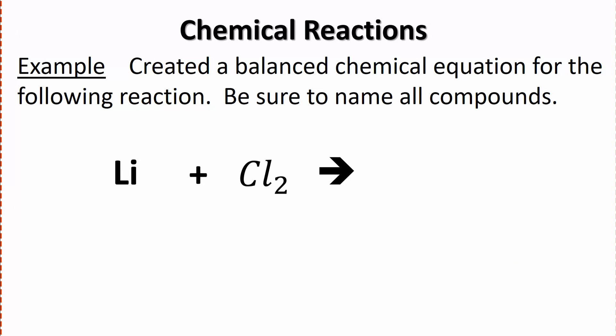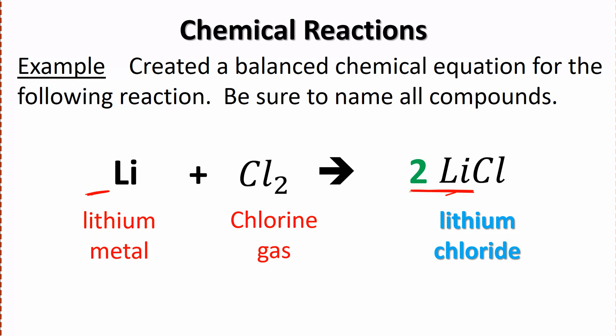Let's try this again with perhaps a slightly more complicated one. Now we've got lithium and chlorine. We look up our charges. Lithium has a charge of plus one and chlorine has a charge of minus one. So this one's nice and simple, it's just LiCl. Then we've got some balancing to do. We've got two chlorines here and one chlorine on that side, so we need a two. Now we also have two lithiums, so we need a two in front of lithium. Then we name everything: lithium metal, chlorine gas, and lithium chloride.